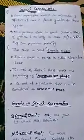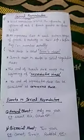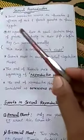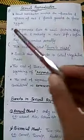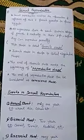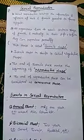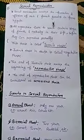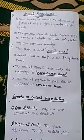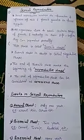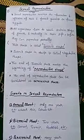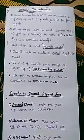What would happen in sexual reproduction? Sexual reproduction involves formation and fusion of male and female gamete to form zygote. All organisms have to reach a certain stage of growth and maturity in their life before they can reproduce sexually.